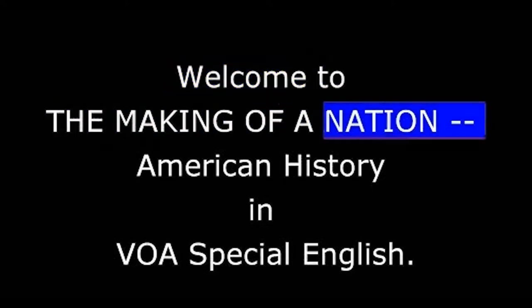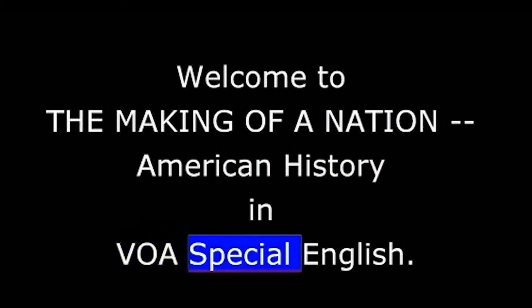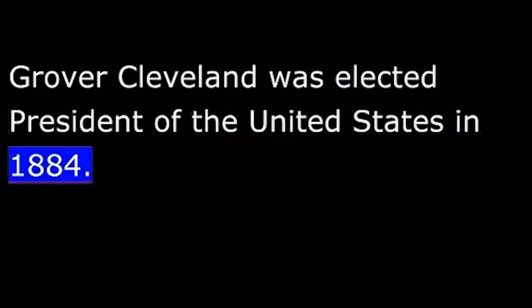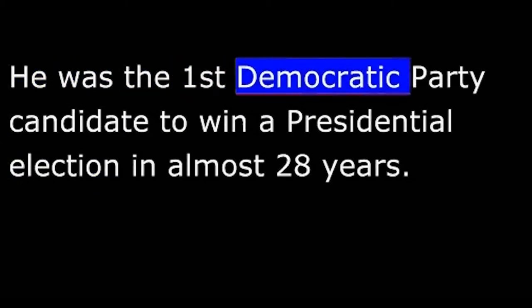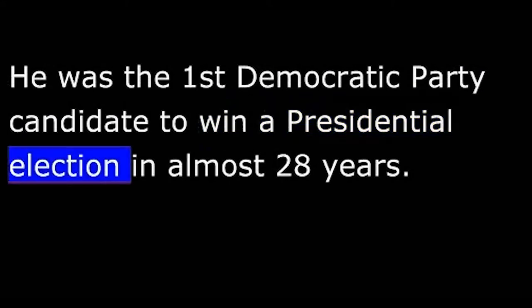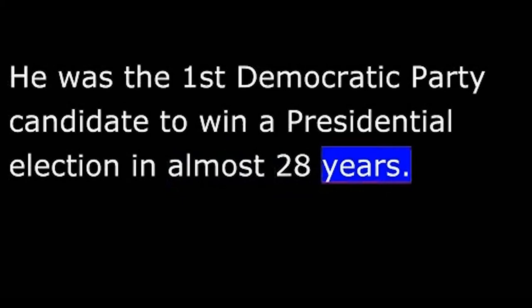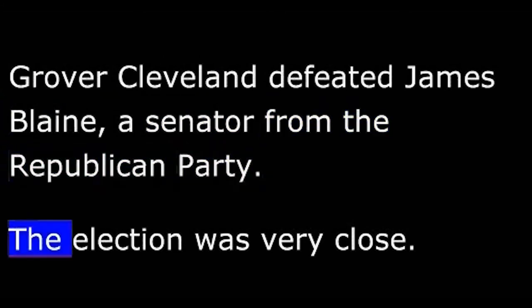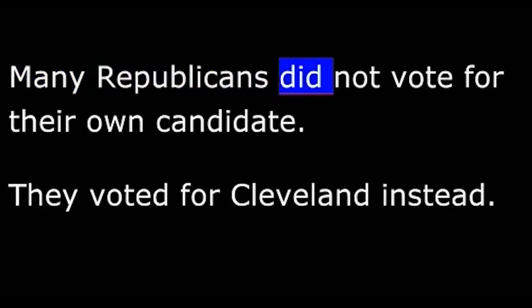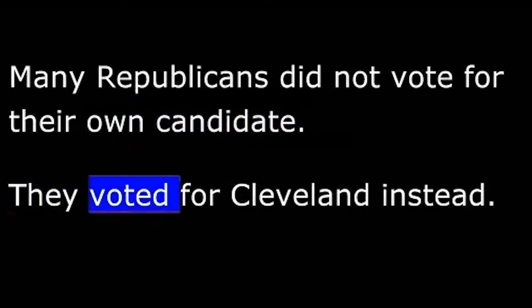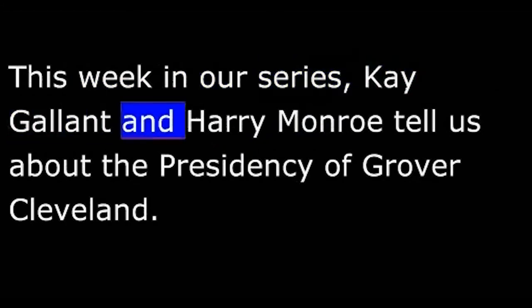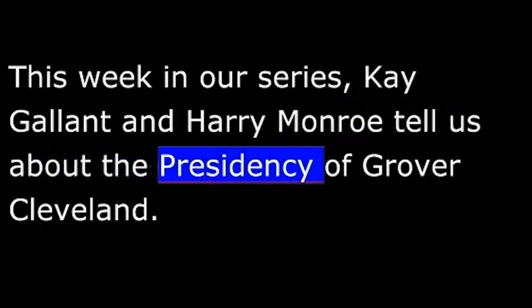Welcome to The Making of a Nation, American History in VOA Special English. Grover Cleveland was elected President of the United States in 1884. He was the first Democratic Party candidate to win a presidential election in almost 28 years. Cleveland defeated James Blaine, a senator from the Republican Party. The election was very close. Many Republicans did not vote for their own candidate — they voted for Cleveland instead, believing he was honest and that Blaine was not. This week, Kay Gallant and Harry Monroe tell us about the presidency of Grover Cleveland.